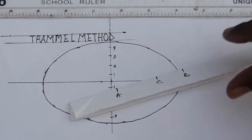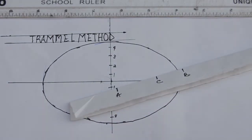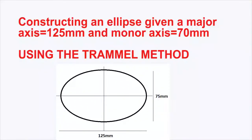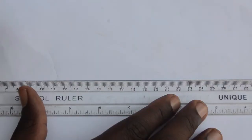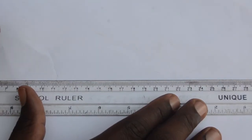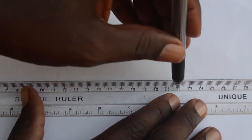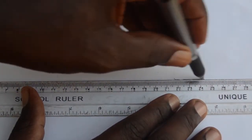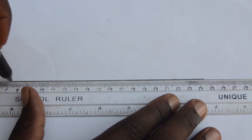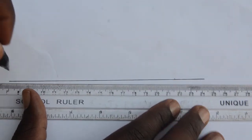Today we are constructing an ellipse given a major axis equal to 125 millimeters and a minor axis equal to 70 millimeters, and we are going to use the trammel method. Draw a horizontal and vertical axis.